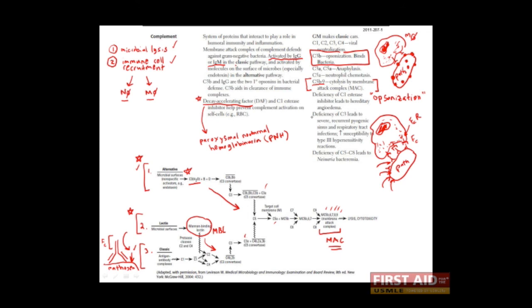Before we move on here, we'll just note that deficiencies in certain complement proteins, like C3 or C5 through 8, can lead to certain infectious susceptibilities. For example, deficiency of C5 through C8 predisposes someone to Neisseria infections. Whereas deficiency of C3 can result in recurrent pyogenic sinus and respiratory tract infections.